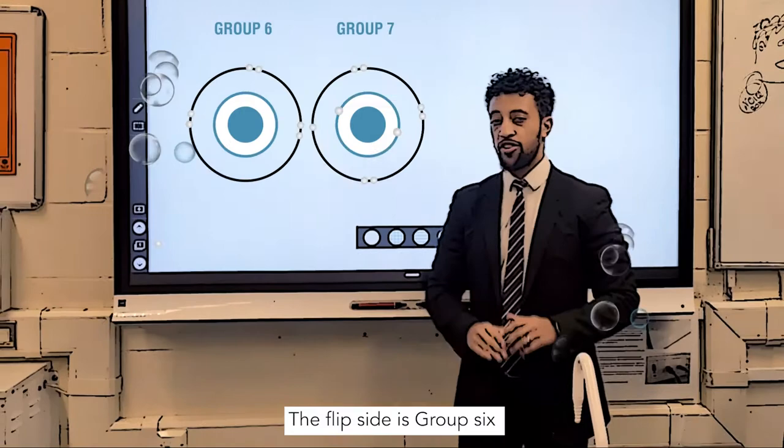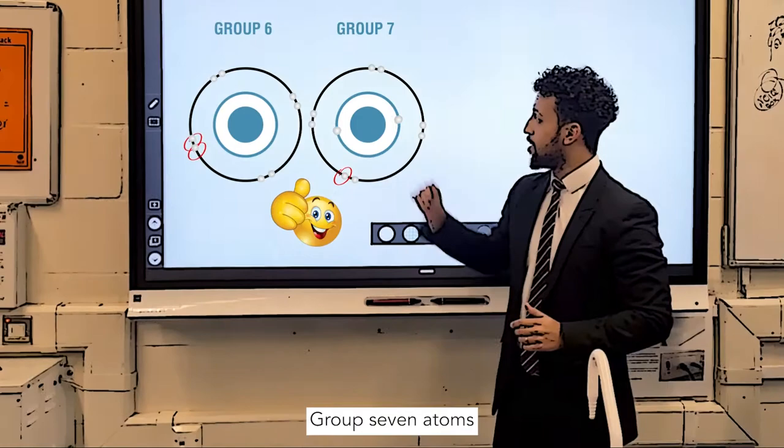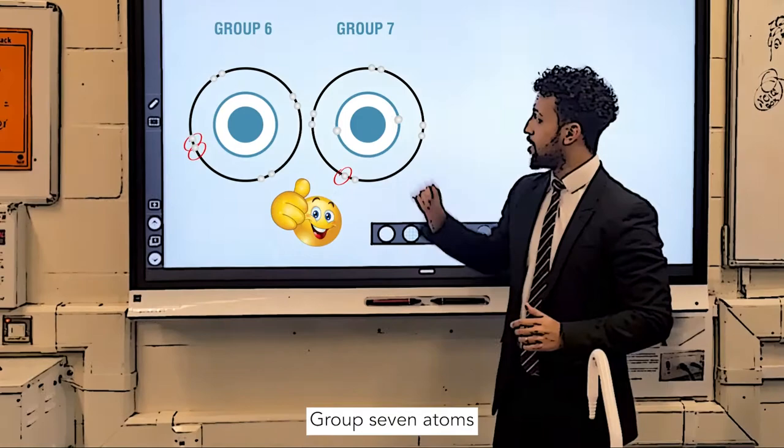The flip side is group six and seven, they don't do the same. To get a full shell, it's electrons they will gain. Group seven atoms, they don't ever show kindness. They don't give, they take and then become one minus.